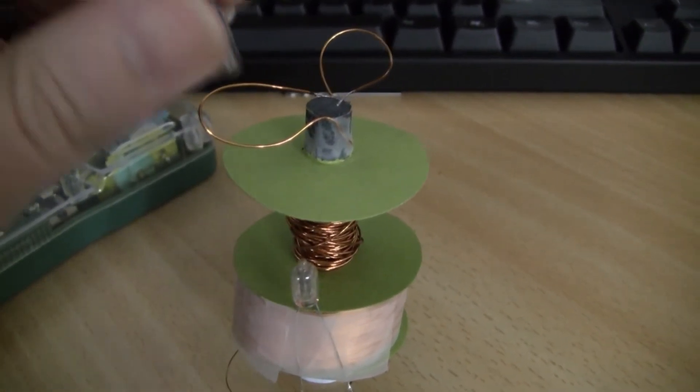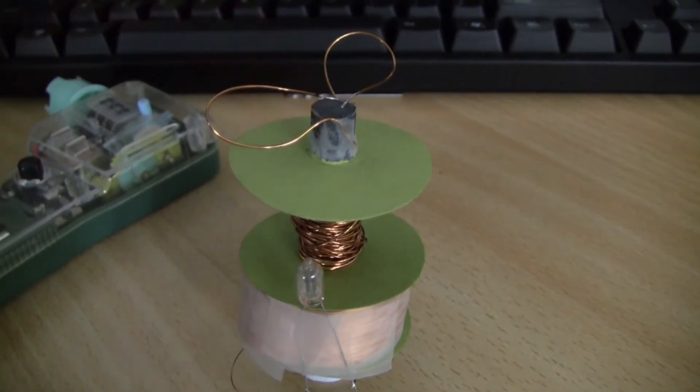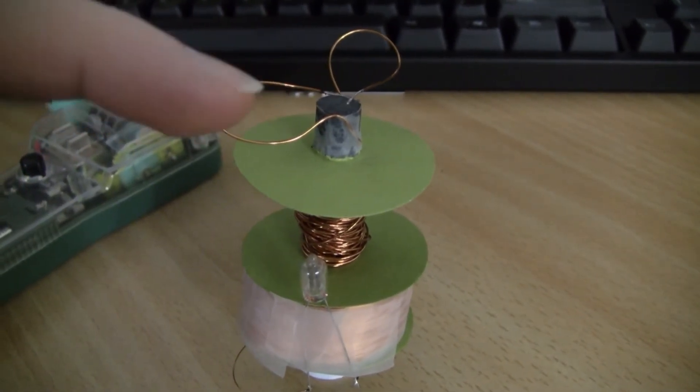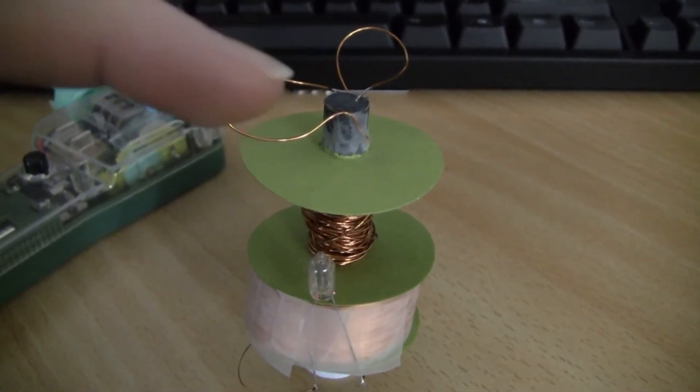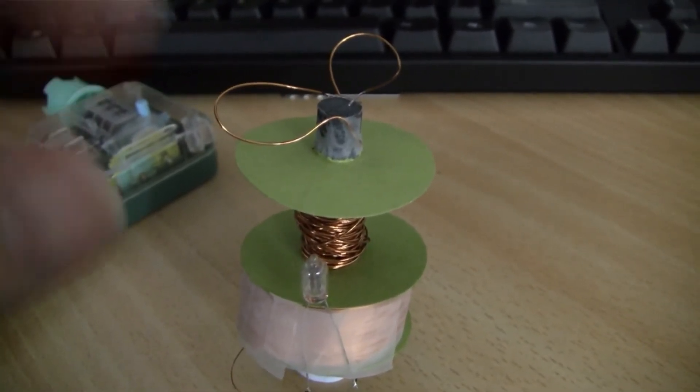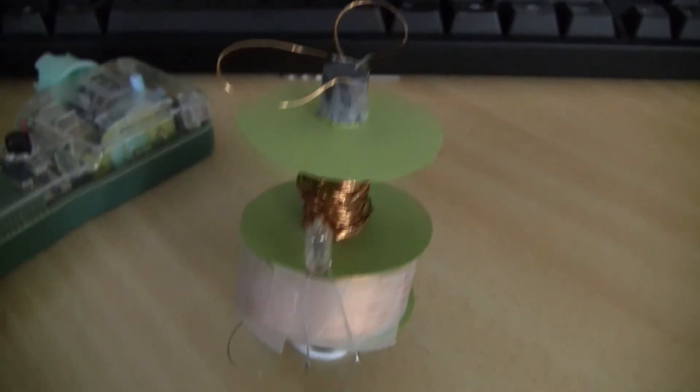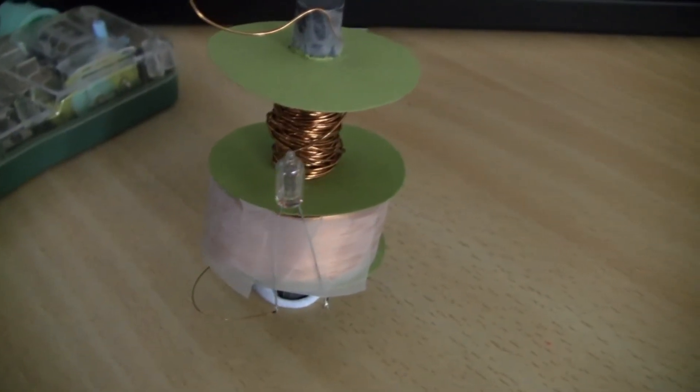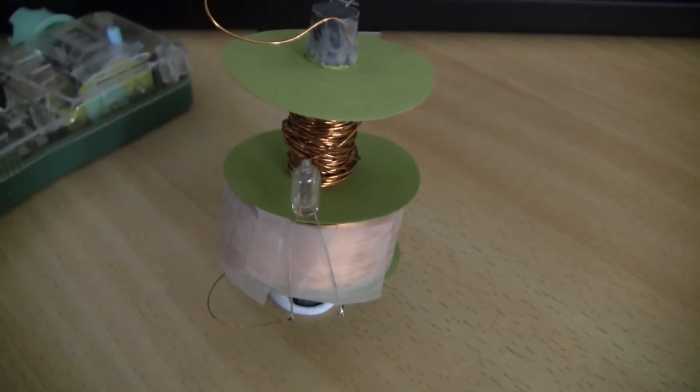And then as the magnet touches the wire, it will break the connection in the primary. And the primary, trying to maintain that current, will produce a very large voltage. And the step-up ratio will produce an even larger voltage in the secondary, and hopefully ionize the gas in the neon bulb.